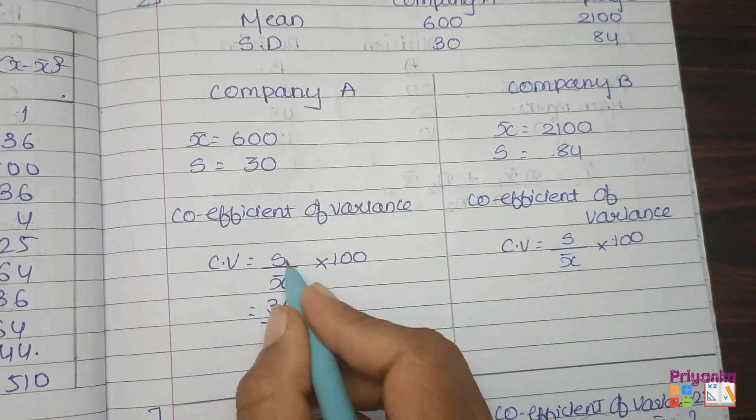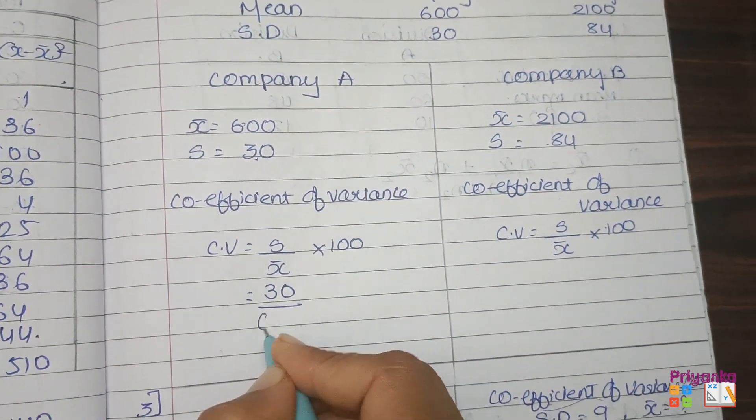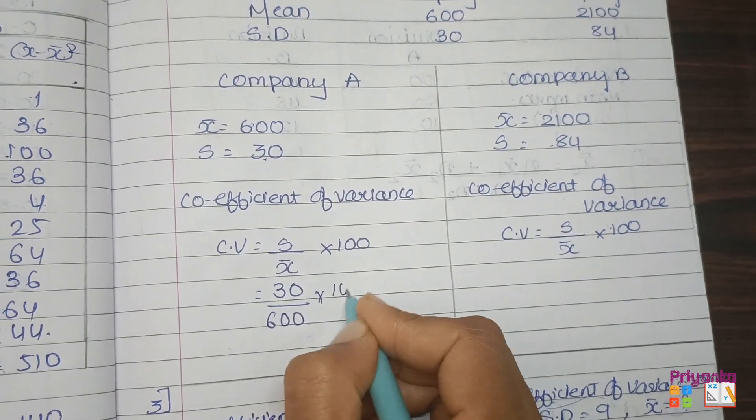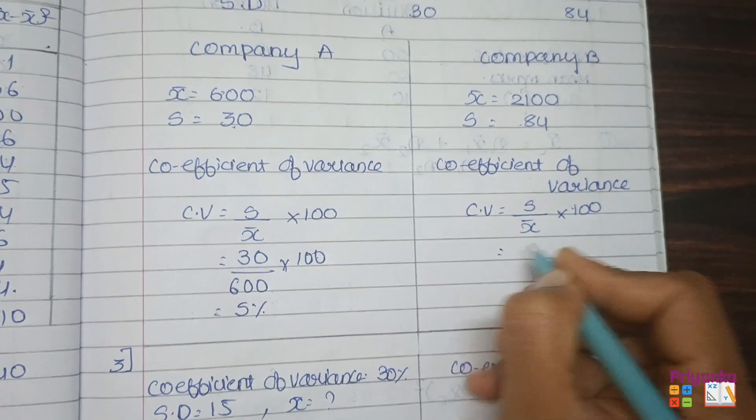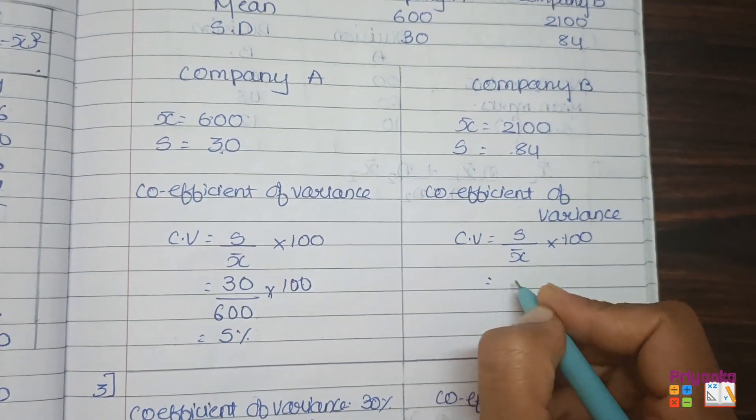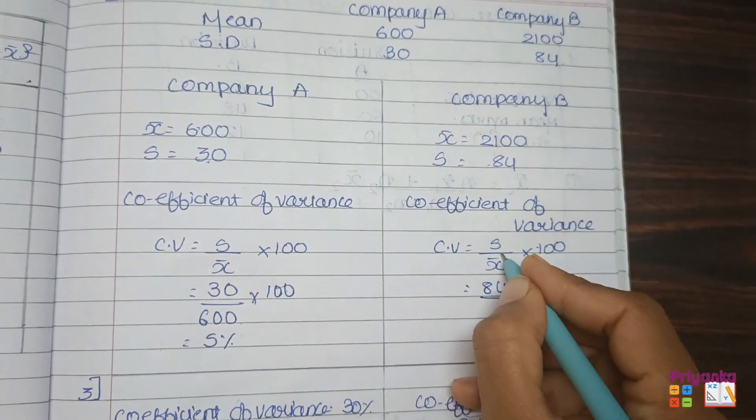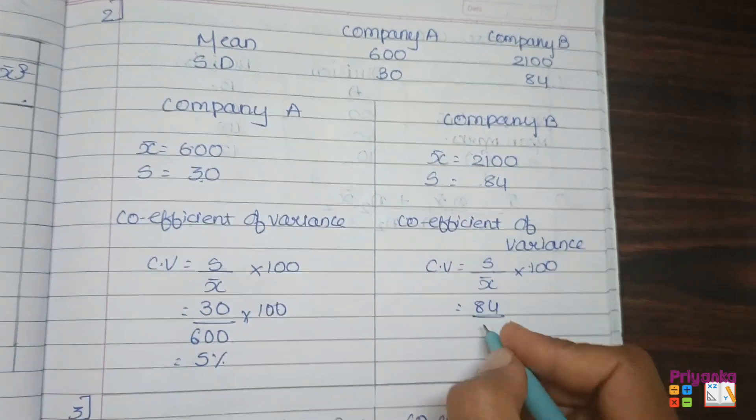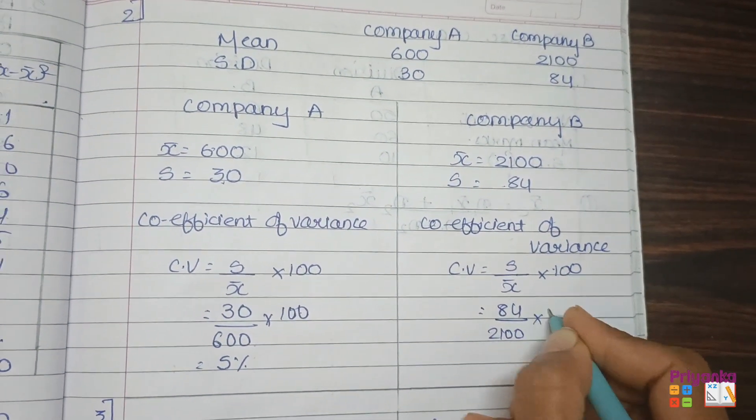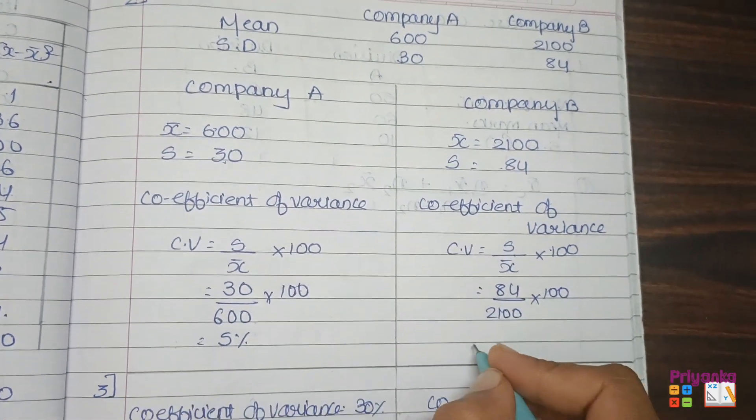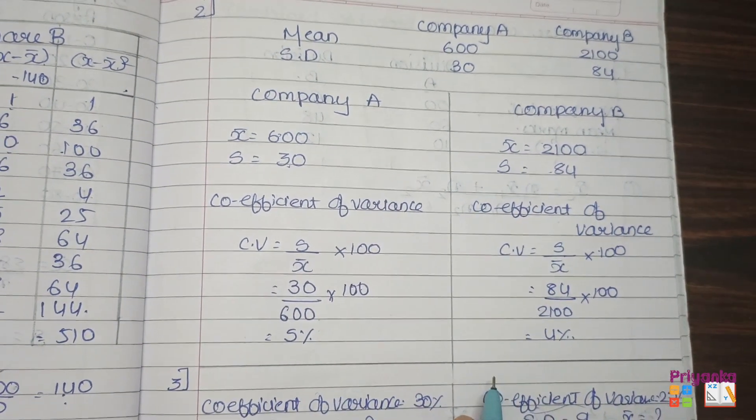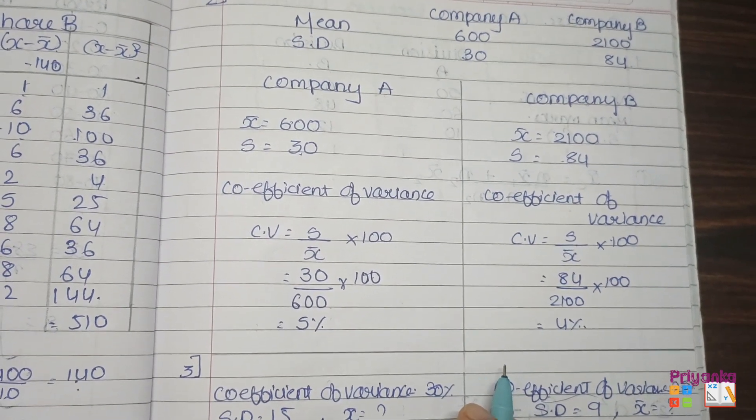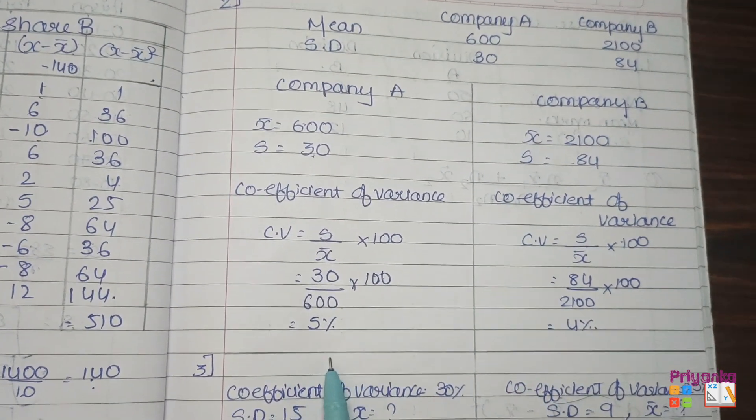S is 30 and the mean is 600 into 100. Here we get the answer 5%. And over here, let's keep 84 - it is the standard deviation divided by mean, that is 2100 into 100, and here we get the answer 4%. So here coefficient of variance in the daily salary administrative staff of company B is less than company A.